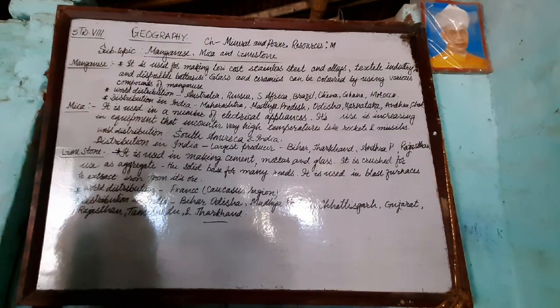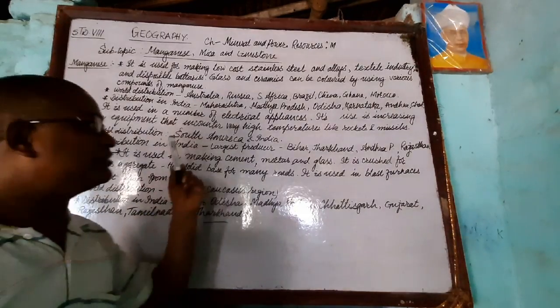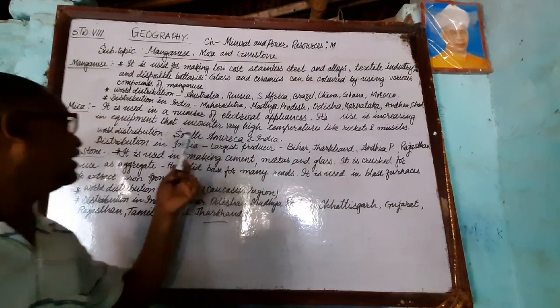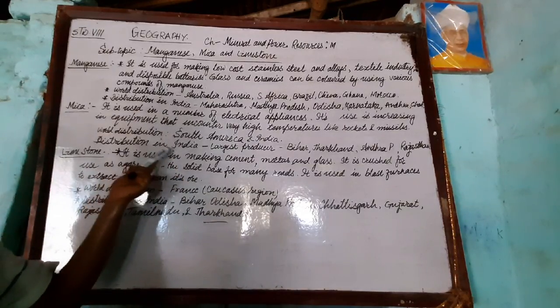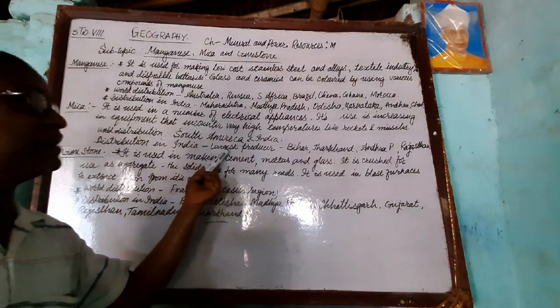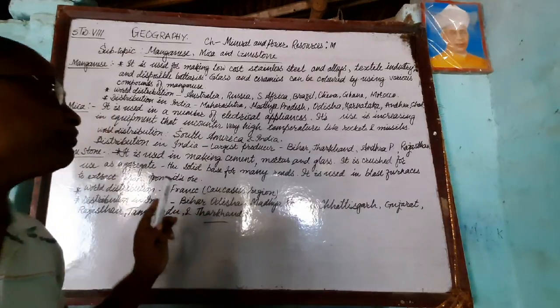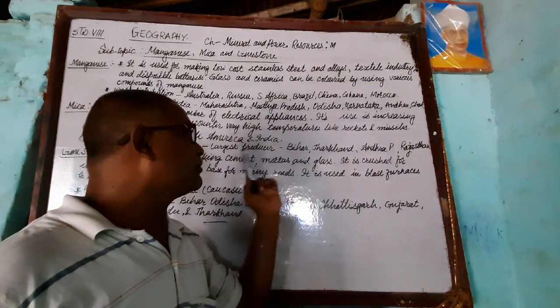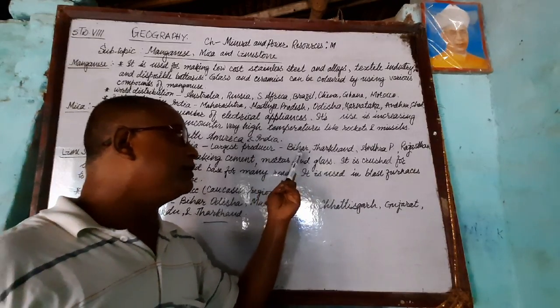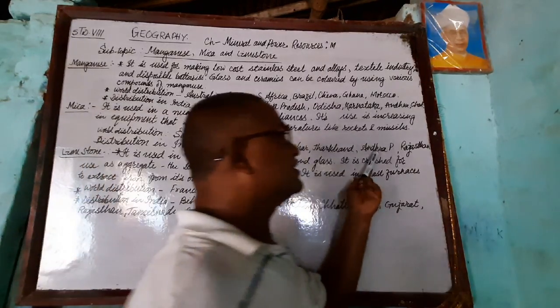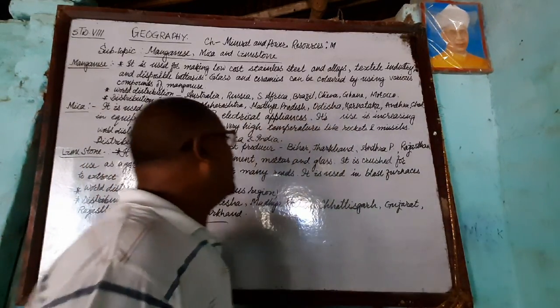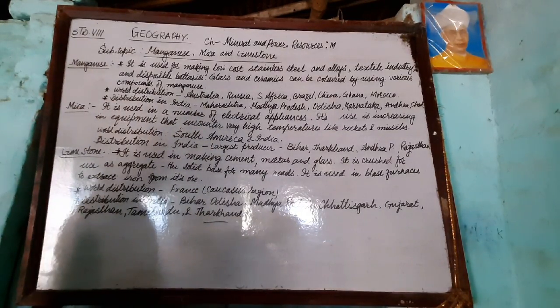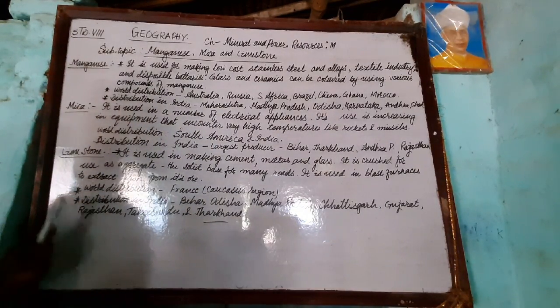Mica is found in South America. For distribution in India, India is the largest producer of mica. It is found in Rajasthan among other states.